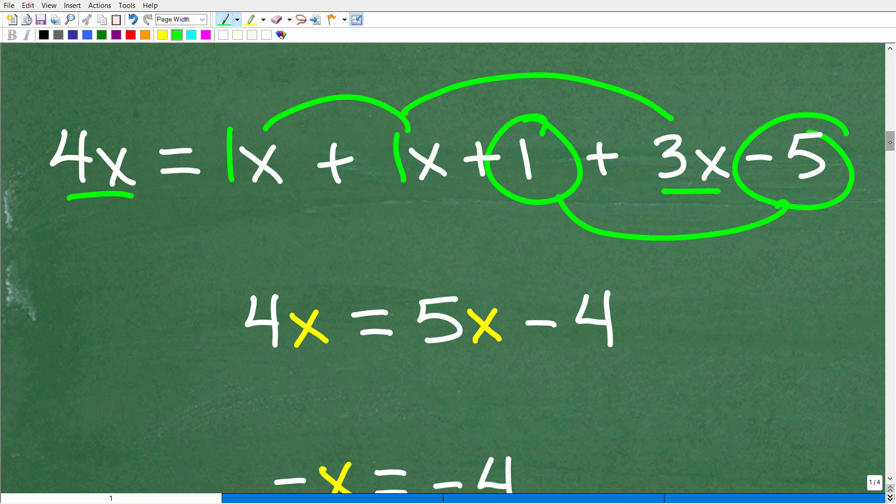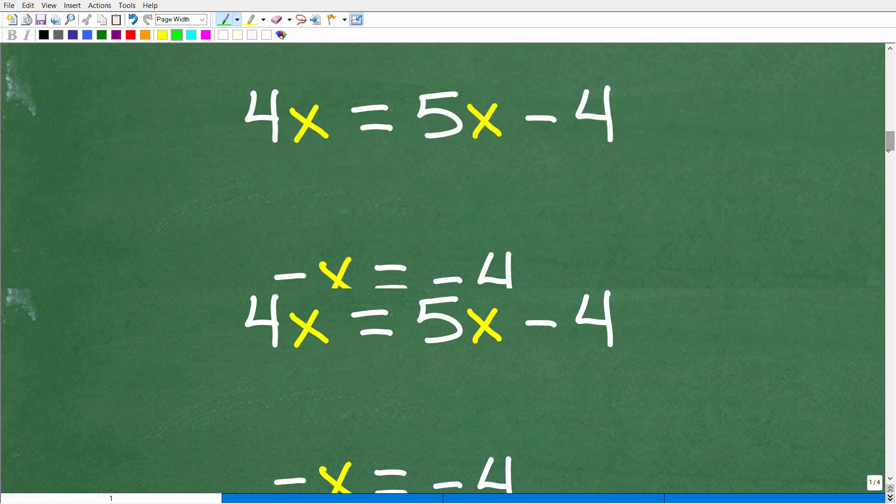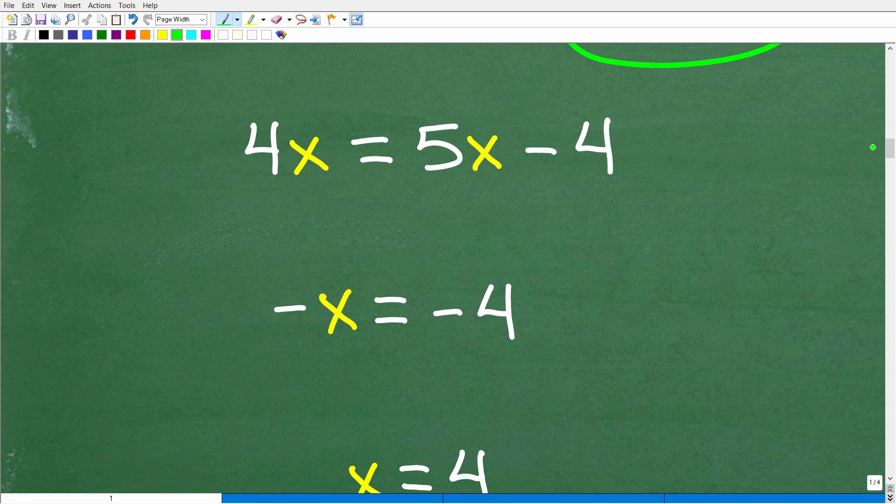Okay, so now we have 4x is equal to 5x minus 4. So we want to solve for x. Well, there's a couple of different things you could do here. Some of you that are more experienced in algebra could subtract 4x from both sides of the equation. That's perfectly fine. But typically, we like to put our variables on the left-hand side of the equation and our numbers on the right. Either way, it's going to work out. But here, I'm going to go ahead and just subtract 5x from both sides of the equation. So I'm going to get all my variables together. And when I add down, I'm going to get 4x plus a negative 5x. That's negative 1x. You've got to be very careful with these positive and negative values.